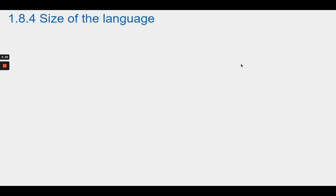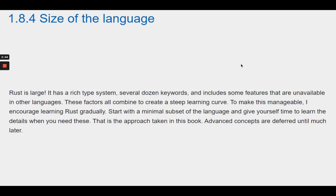Section 1.8.4 Size of the Language. Rust is large. It has a rich type system, several dozen keywords, and includes some features that are unavailable in other languages. These factors all combine to create a steep learning curve. To make this more manageable, I encourage learning Rust gradually. Start with a minimal subset of the language and give yourself time to learn the details when you need these. That is the approach taken in this book. Advanced concepts are deferred until much later.